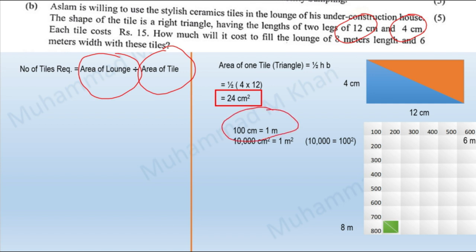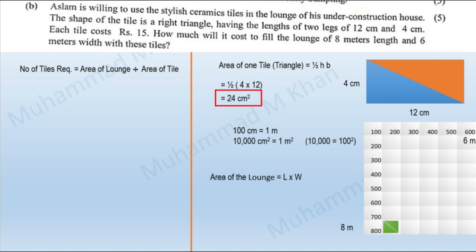This does not mean that 100 centimeter square equals one meter square. The square of 100 is 10,000, therefore 10,000 centimeter square equals one meter square. Some online solutions didn't realize this and made a mistake that I will be showing at the end of my solution. Moving forward, the area of the lounge — since the formula is length times width.